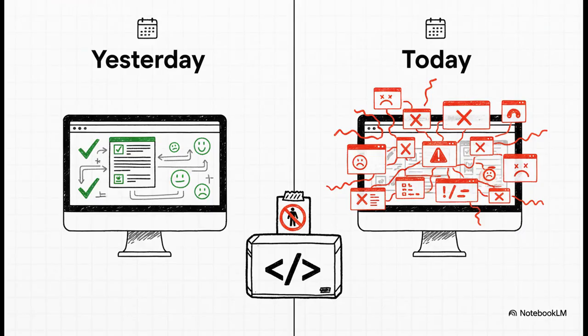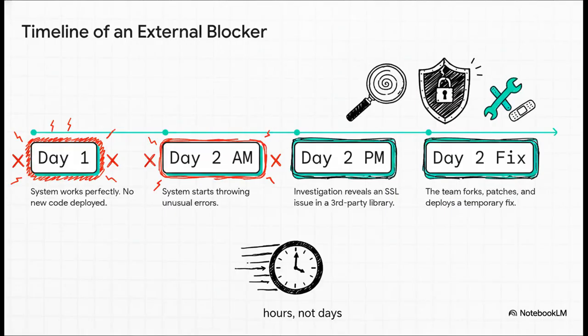Okay, story number two. And this one is all about looking for those external causes. So, imagine this. You haven't shipped any new code for a week. Yesterday, everything was working perfectly. But you come in this morning, and the whole system is throwing errors. Your heart sinks, right? What could it possibly be? As you can see from this timeline, the problem wasn't in their code at all. A third-party library they were using to talk to Zendesk had some kind of SSL issue. Now, instead of just waiting around for the library owner to fix it, the team acted fast. They forked the library, patched the issue themselves, and deployed their own temporary fix to get the system back online in a matter of hours, not days.